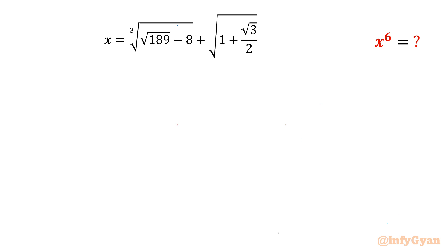Welcome back to Infigyan, my dear friends. In today's video we have one very interesting question from Radical Mathematics. We have to evaluate the expression x power 6, given x is cube root of (square root of 189 minus 8) plus square root of (1 plus root 3 by 2).